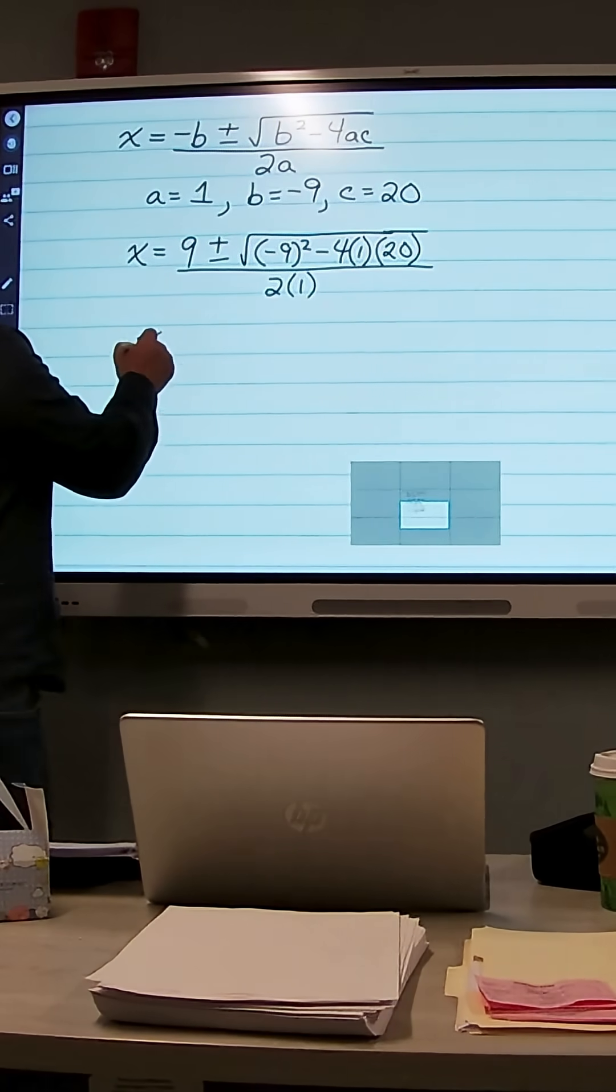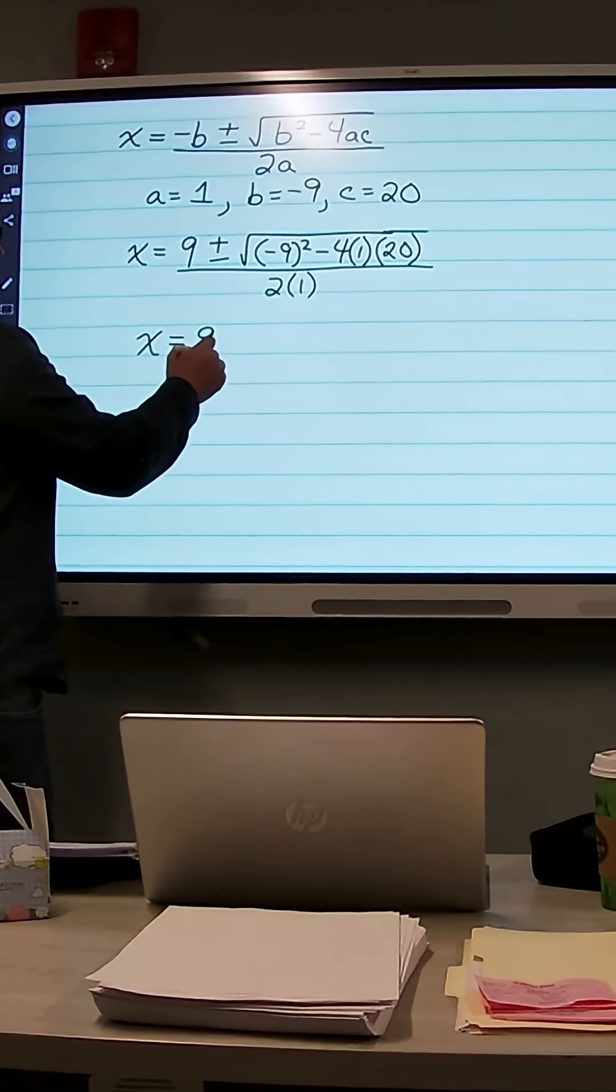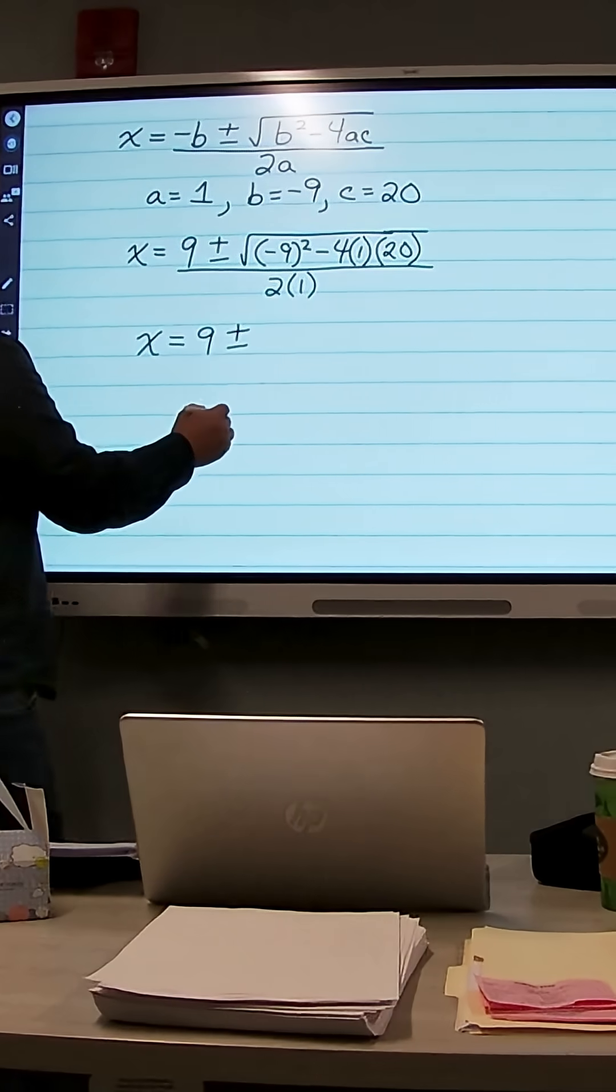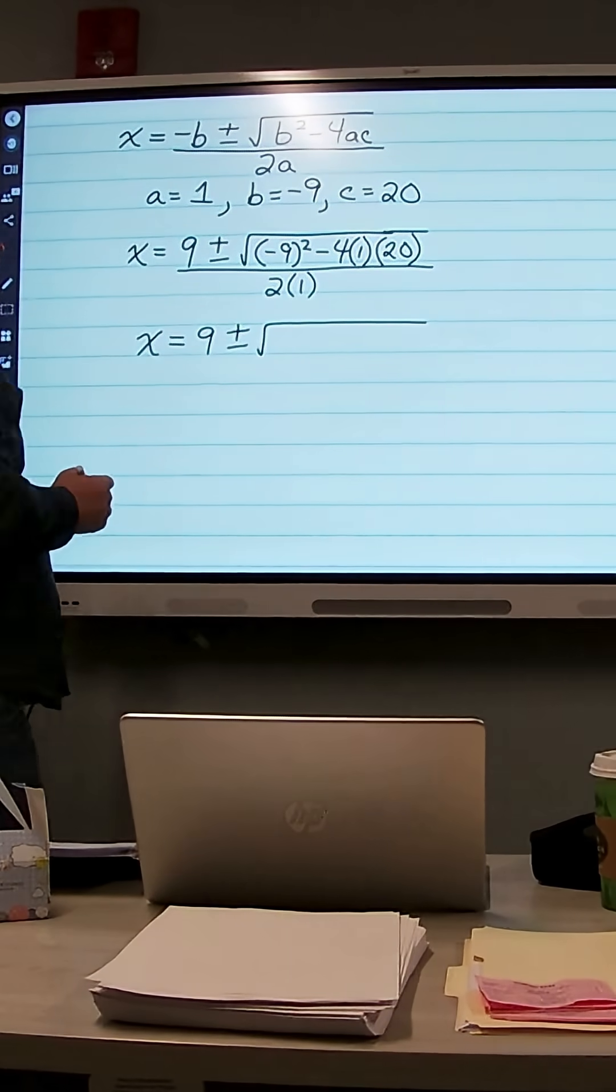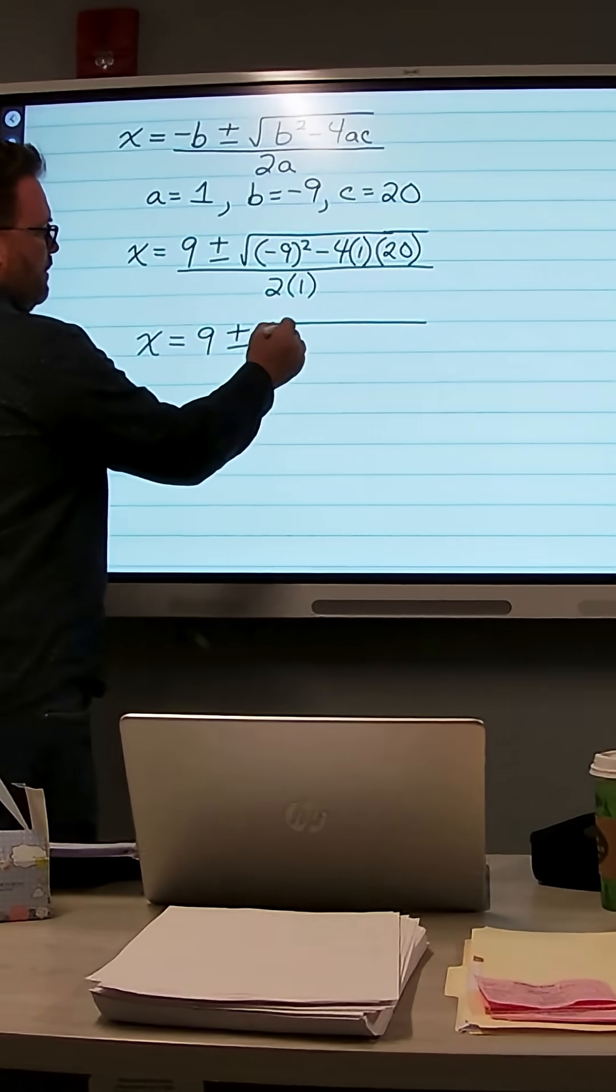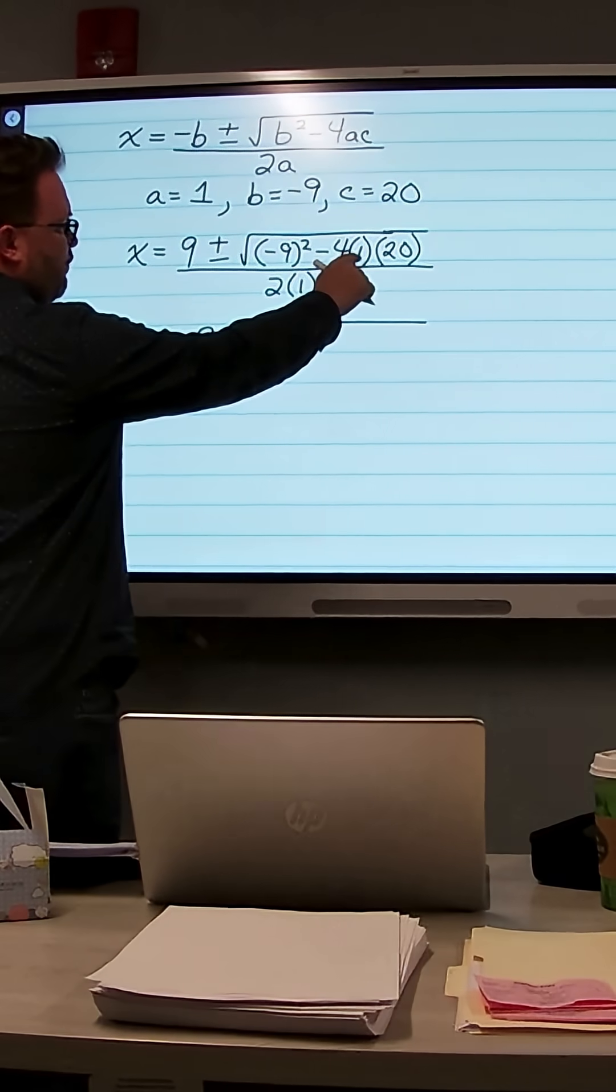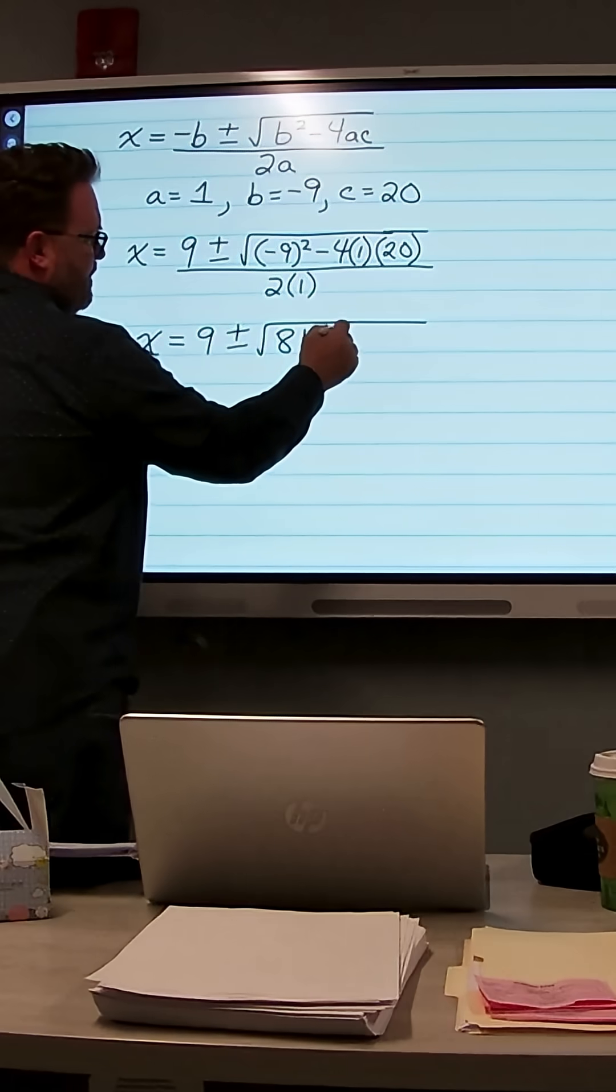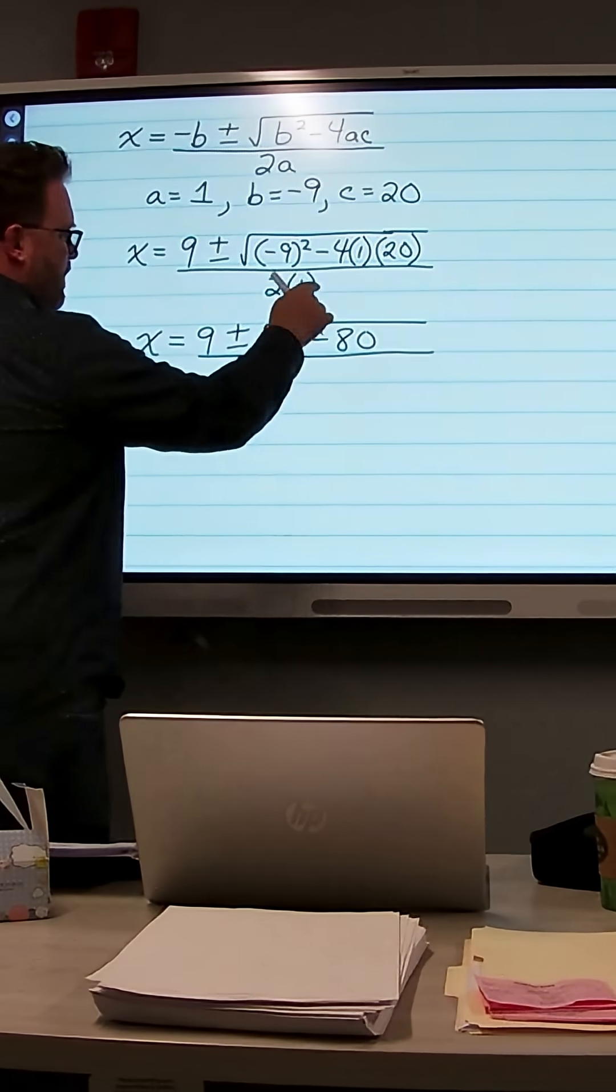All right, so if we work this out, we get x equals 9 plus or minus negative 9 squared is negative 9 times negative 9. That's positive 81 minus 4 times 1 is 4, 4 times 20 is 80, so minus 80. It's all over 2 times 1, which is 2.